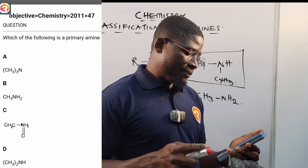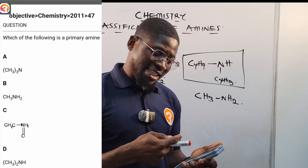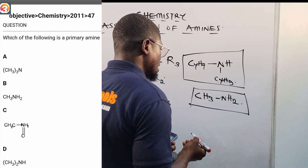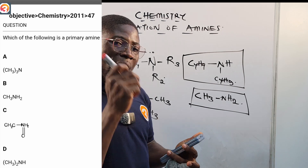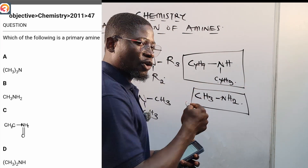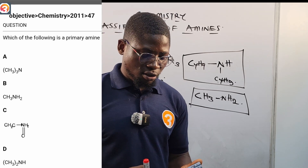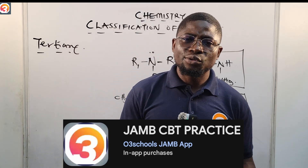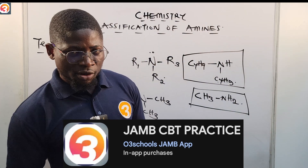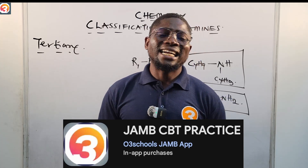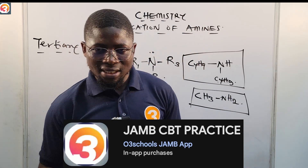For 2011 question 47: which of the following is a primary amine? Methylamine (CH₃NH₂) is listed and we know methylamine is a primary amine — only one hydrogen atom has been replaced by an alkyl group. In the next class, I'll be looking at naming amines. My name is Master T, the grand commander of the O3 Schools army. Keep studying, download and activate the application for your success. Thank you for watching.